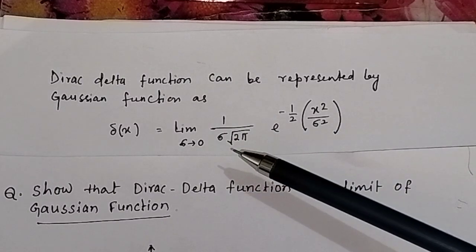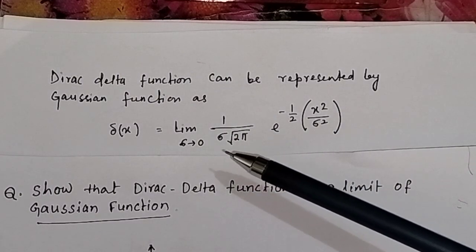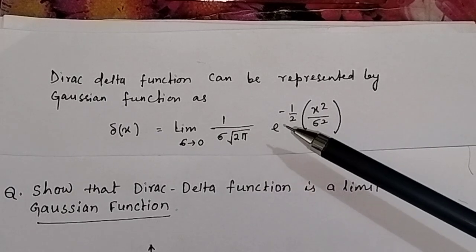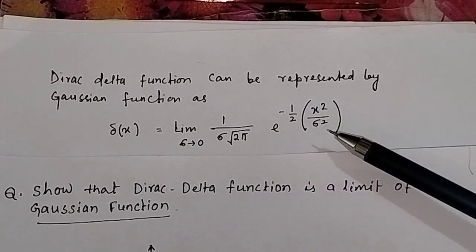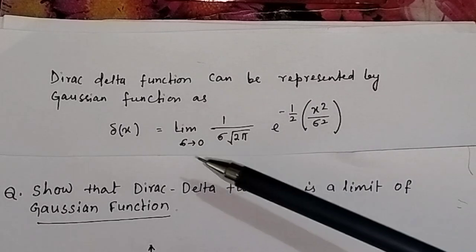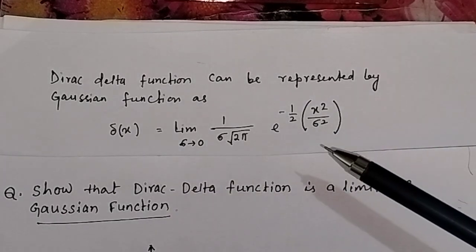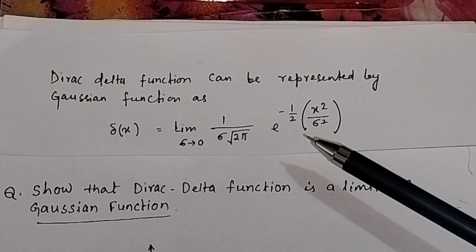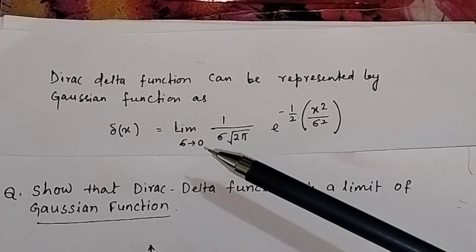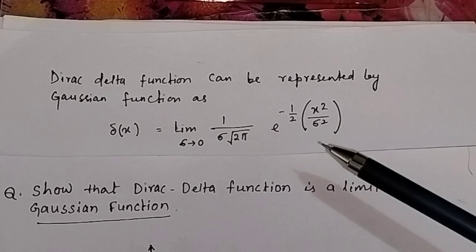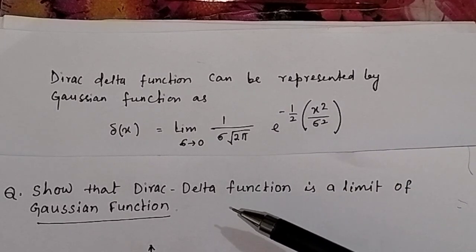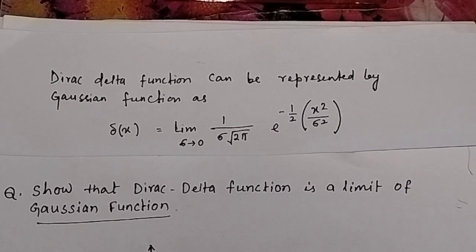Therefore, delta(x) equals the limit as sigma approaches 0 of 1 divided by sigma times the square root of 2 pi, times e to the power of minus one-half x squared divided by sigma squared. This is the representation of the Dirac delta function in terms of the Gaussian function, proving that the Dirac delta function is a limit of the Gaussian function.